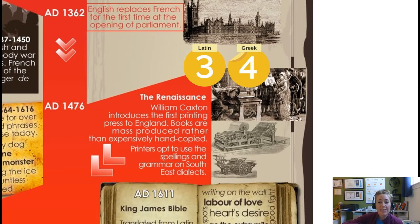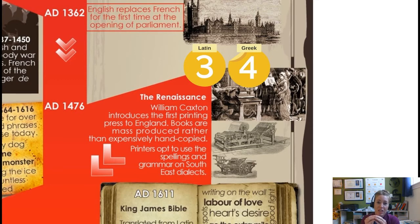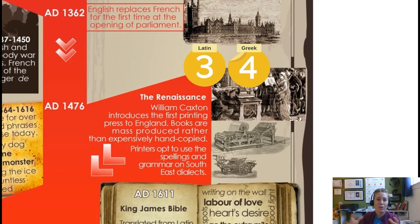Greek enters English for the first time here, and Latin touches the language again. But this is not the same type of contact as before — past contact was literal, like invaders or missionaries physically bringing a language to you. This Renaissance contact was different: it was cultural, a global shift of interest in Greek and Latin. Middle English speakers in England wanted to hop on this Greek and Latin trend in order to look prestigious like the rest of the world.